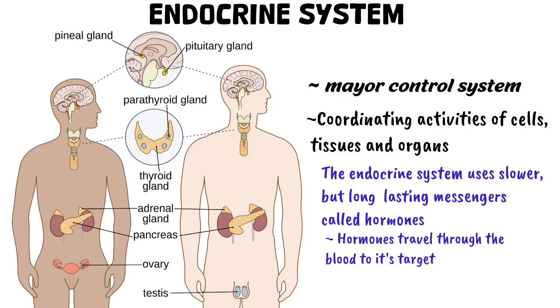Other organs, such as the heart, the kidneys, the stomach, intestines, and adipose tissue, also contain endocrine cells that secrete hormones.